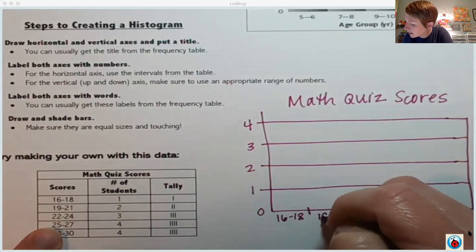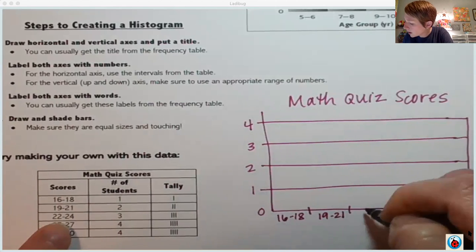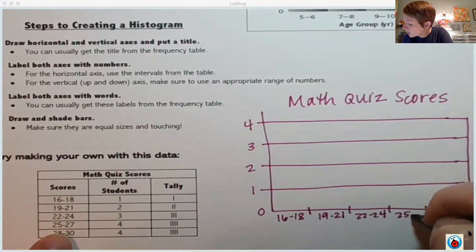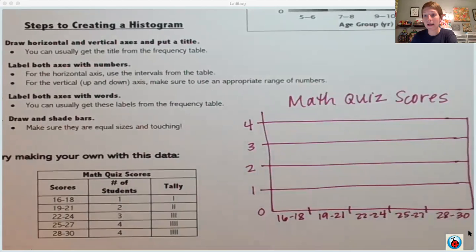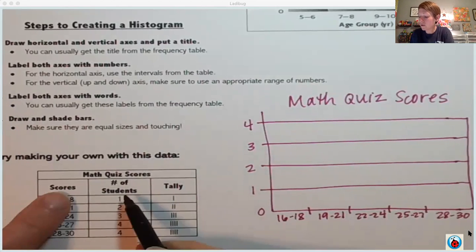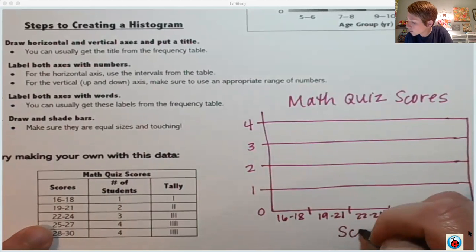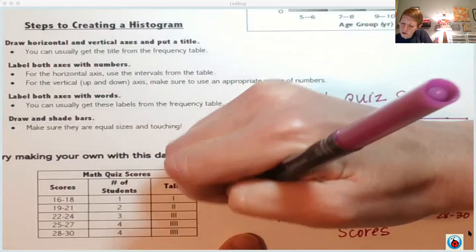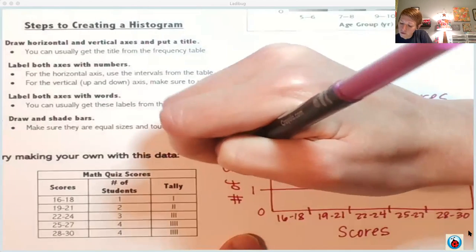Then I put my intervals here where my bars are going to go. 16 to 18, 19 to 21, 22 to 24, 25 to 27, and 28 to 30. So I've labeled my axes with numbers. Now I need to label them with words. I can just get those words straight from my table. My intervals represent the scores on the math quiz and then these numbers on the side are the number of students who got those scores.